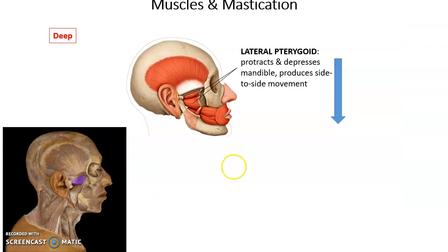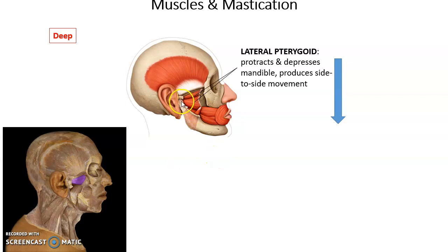The lateral pterygoid is a deep muscle requiring removal of skull bone to see. It inserts into the mandible and its function is to protract and depress the mandible — helping to lower the jaw in a controlled way — and to move the mandible from side to side.